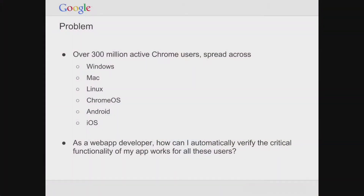We have an ever-expanding amount of platforms. We started with Chrome for beta on Windows in 2008, then expanded to other desktops — Mac and Linux. More recently, we branched out into Chrome OS, and now mobile: Chrome for Android and Chrome for iOS.